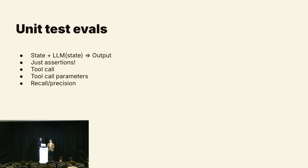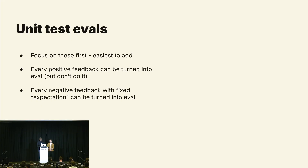Starting with unit test evals — you're just trying to predict the n+1 state from the current state. These work great for simple assertions: checking whether the next state is a specific tool call, whether the tool call parameters are correct, whether the answer contains a specific keyword, or whether the agent determined it was done. If you're starting out, we recommend focusing on unit test evals first because these are the easiest to add. They help you build the muscle of looking at your data, spotting problems, creating evals that reproduce them, and focusing on fixing them.